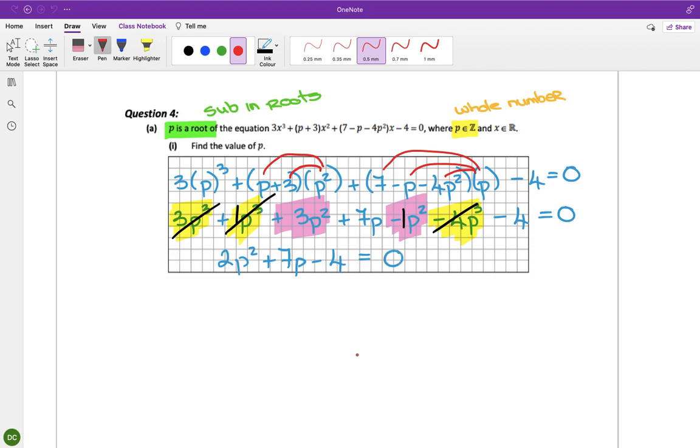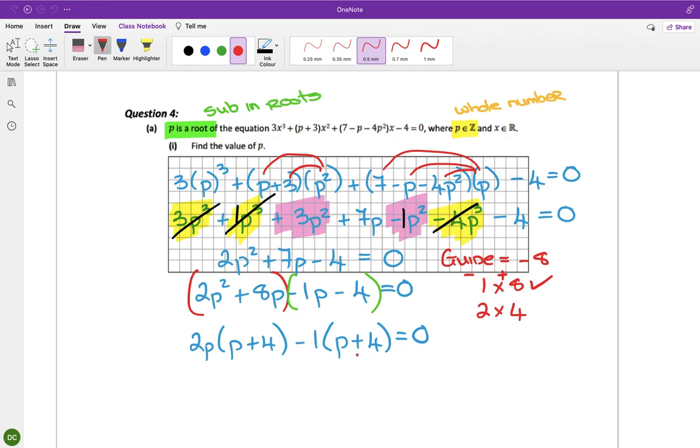So it's minus b or a guide number. I'm going to do guide. So the guide is minus 8, so 1 by 8, 2 by 4. We're looking for 7, so it's going to be 1 by 8, and we're looking for a plus 7, so it's going to be a plus on the 8 and a minus on the 1. So write down 2p squared, and then plus 8p minus 1p, and then you're minus 4 and you're equals 0, and make your groups. So this is 2p and p plus 4, and this is minus 1 and p plus 4. So that gives me p plus 4, and 2p minus 1.